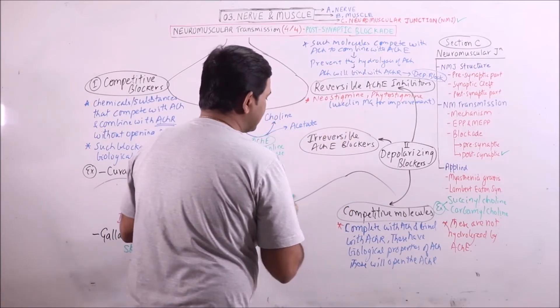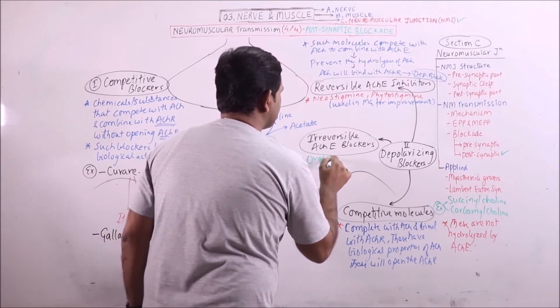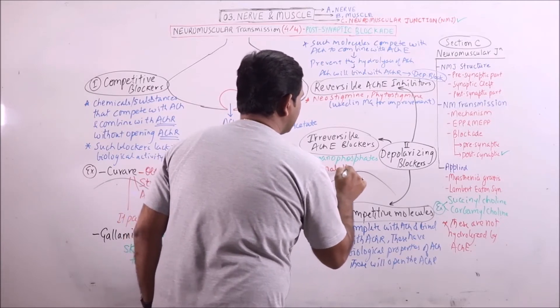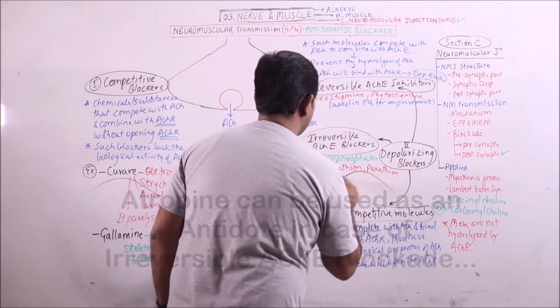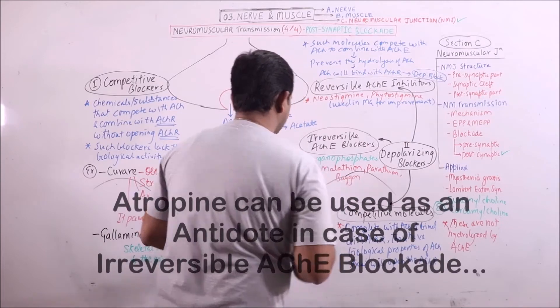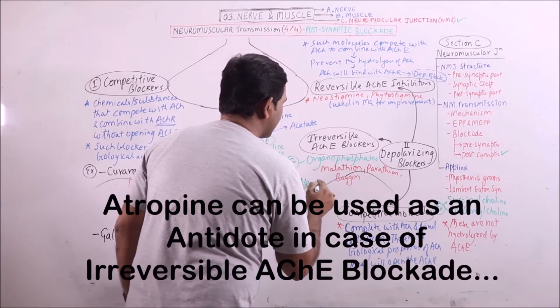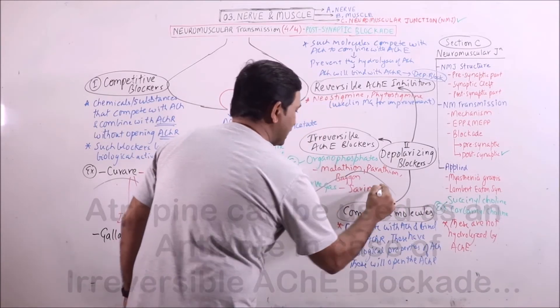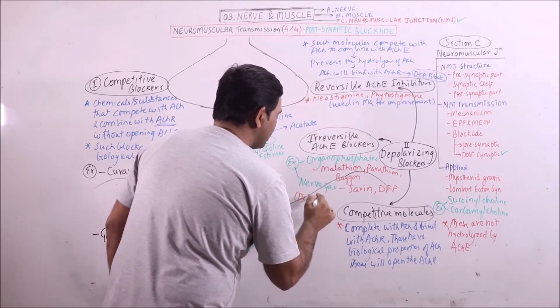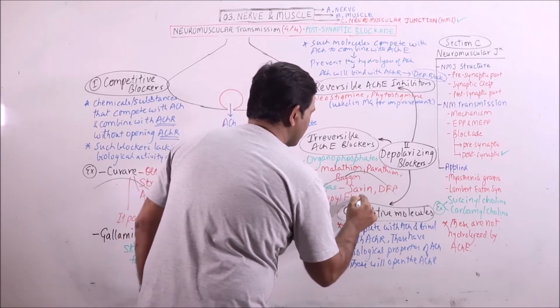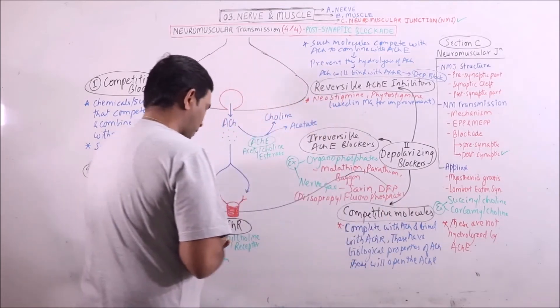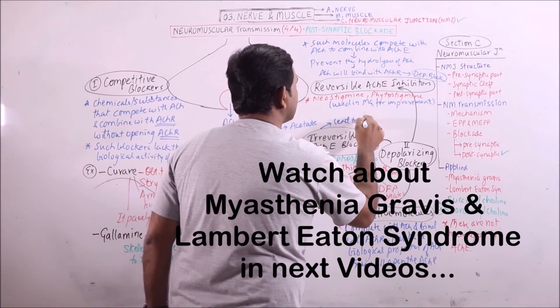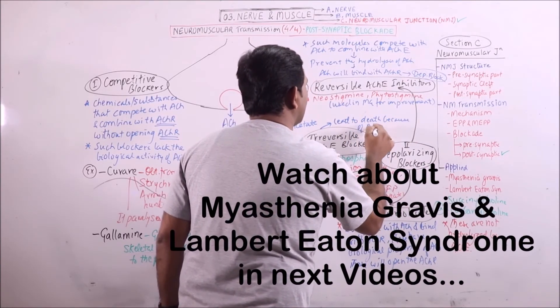Examples of such blockers are organophosphates like malathion, parathion, and begon. Another example is nerve gas, which includes sarin and DFP, diisopropylfluorophosphate. These irreversible acetylcholine esterase blockers will lead to death because of asphyxiation.